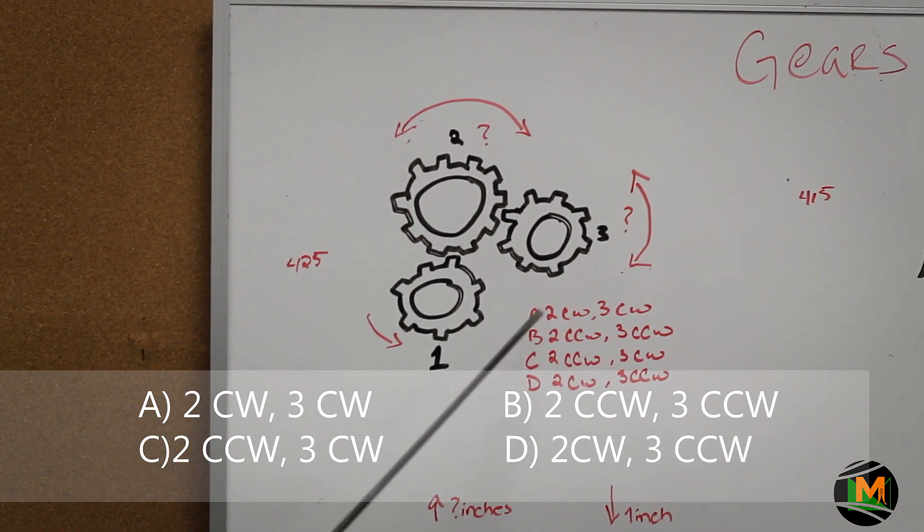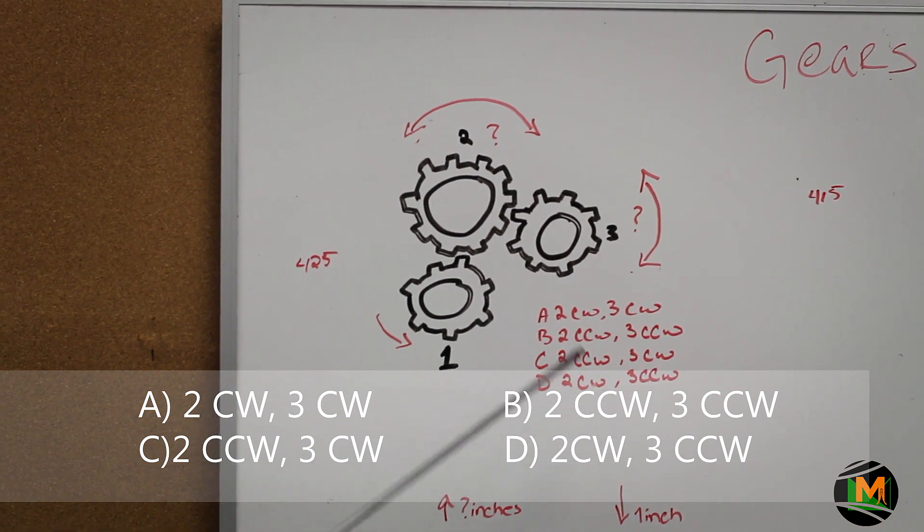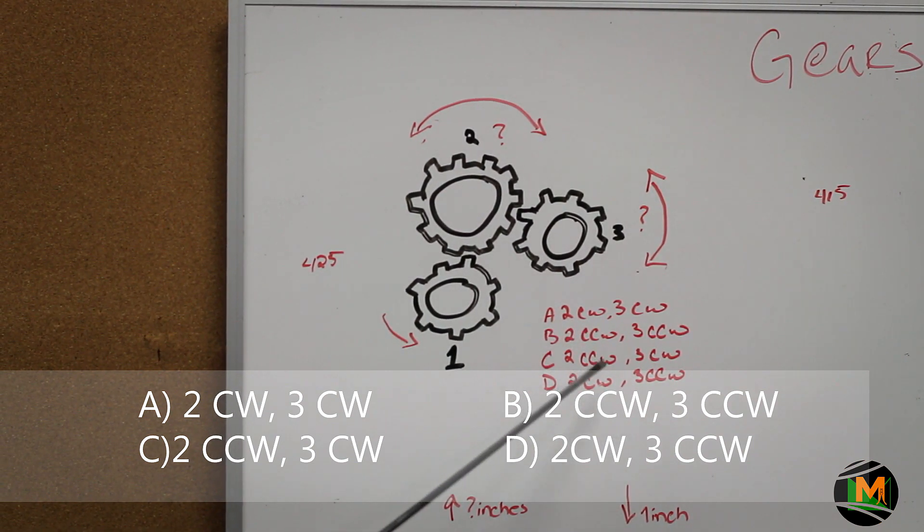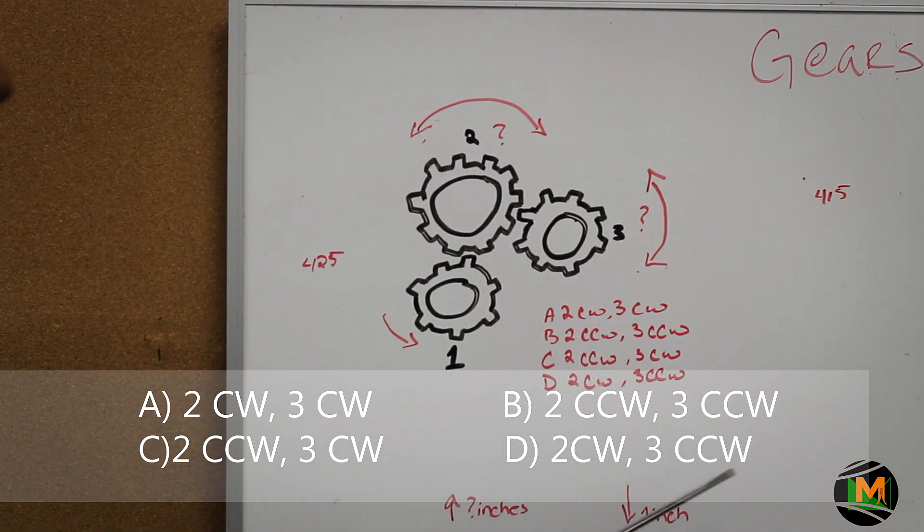Gear number 2 is moving clockwise and gear 3 is moving clockwise. Gear number 2 is moving counterclockwise, 3 is also moving counterclockwise. Gear number 2 counterclockwise, 3 clockwise.